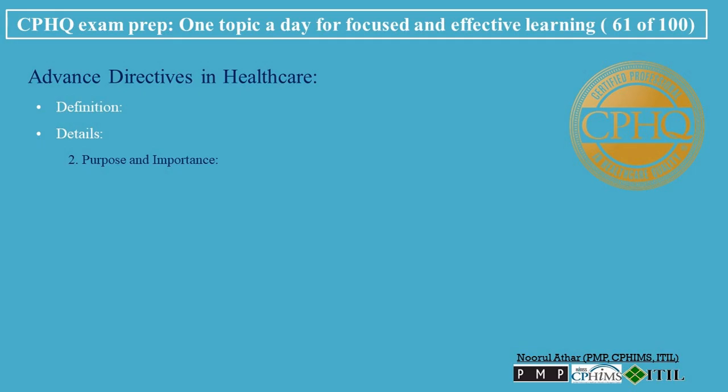Purpose and Importance. Autonomy in Decision-Making ensures that an individual's healthcare preferences are known and respected, especially in critical and end-of-life care situations. Guidance to Healthcare Providers and Families provides clear guidance to healthcare professionals and family members, reducing uncertainty and potential conflicts regarding care decisions.